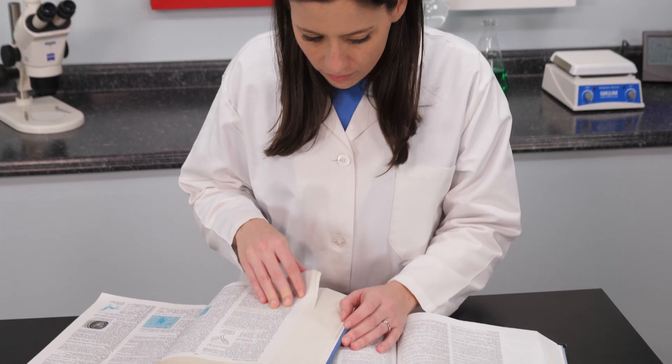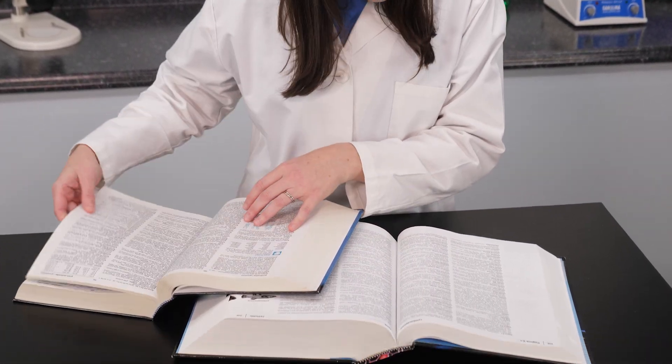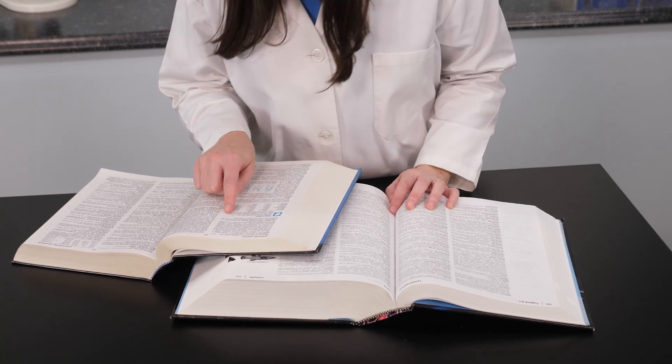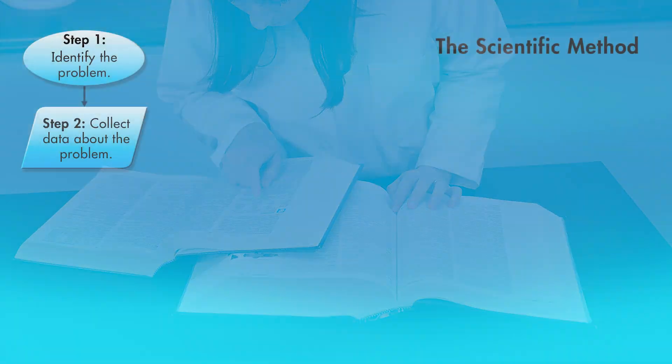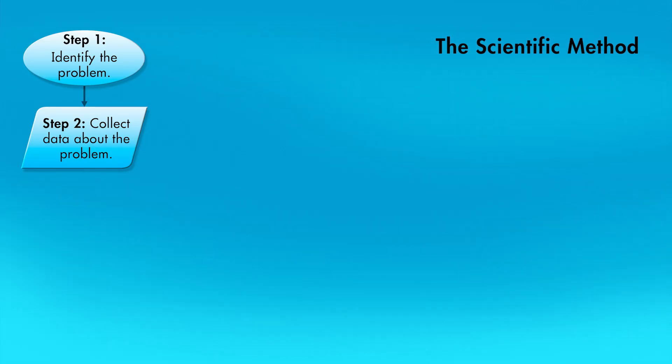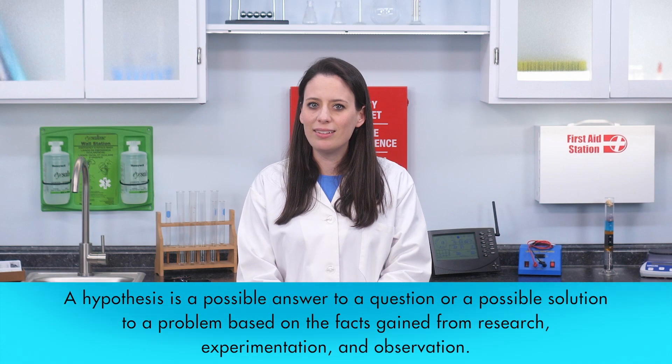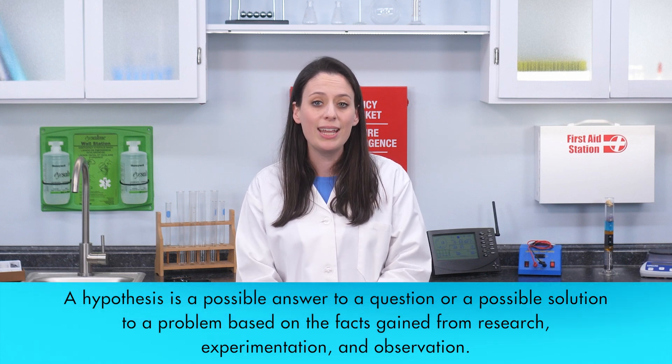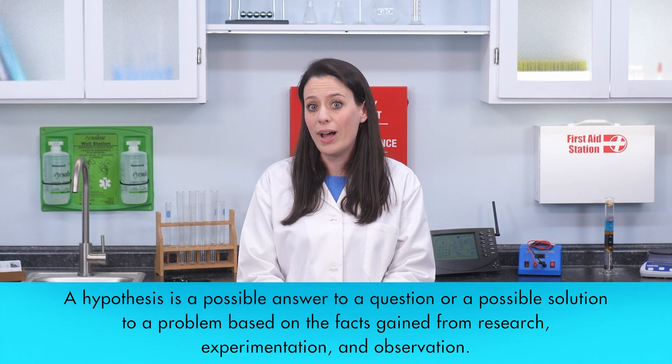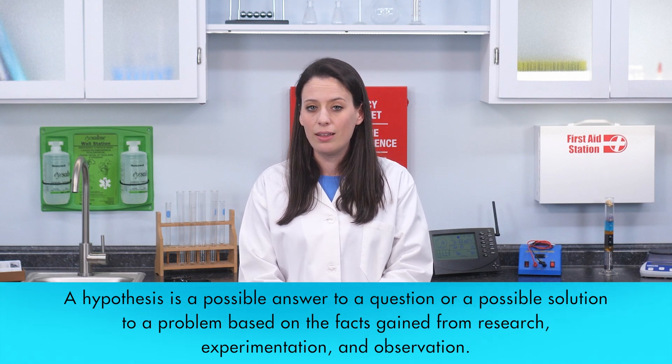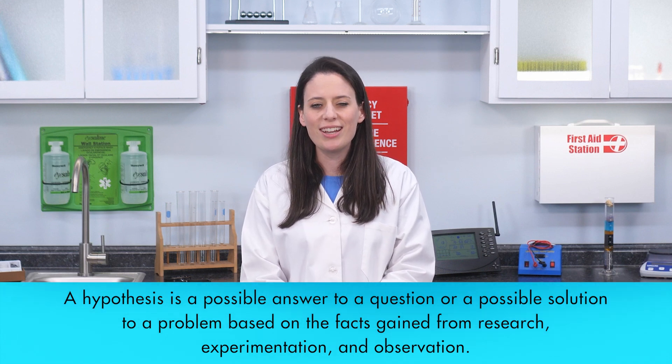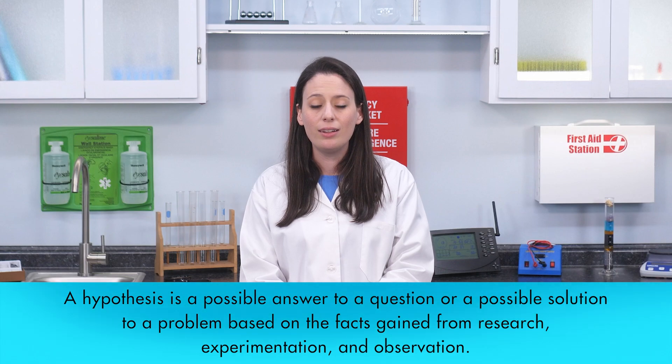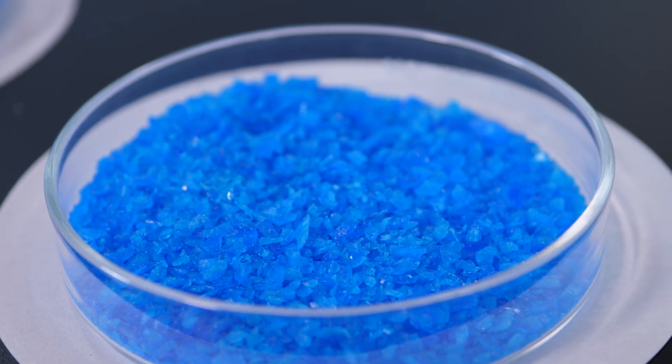Now that we have conducted some tests to determine some of the properties of the unknown substance, we compare our data with the data of other researchers. That brings us to the third step in the scientific method: formulate a hypothesis. A hypothesis is a possible answer to the question we posed in Step 1 of the scientific method: What is this substance? The hypothesis is based on the facts we collected from our research, experimentation, and observation.